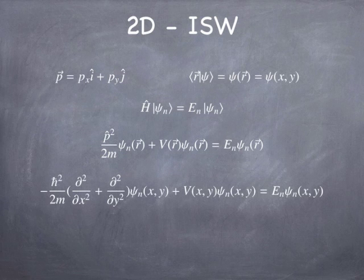If I write that out a little more explicitly, the wave function now becomes a function of x and y, say in Cartesian coordinates, and the potential and the gradient, or the, I should say, p squared now looks like a Laplacian.